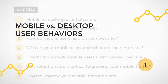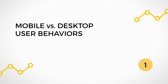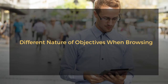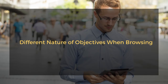Let's start with mobile versus desktop user behaviors. First, consider the different nature of objectives when browsing. As it turns out, mobile users are generally on the hunt for specific information, while time-consuming activities are usually reserved for the comfort of PCs and laptops. Basically, this means that the needs of a mobile visitor on your website tend to be more utilitarian — think of them as distracted, with less time to spend browsing, and often with a specific goal in mind.